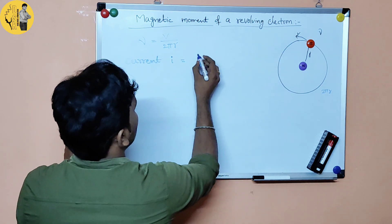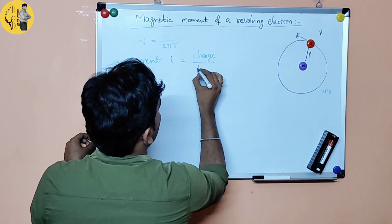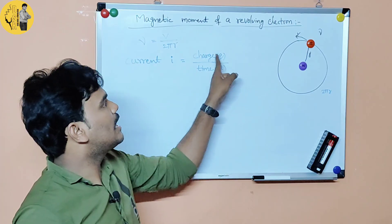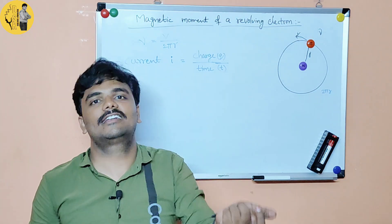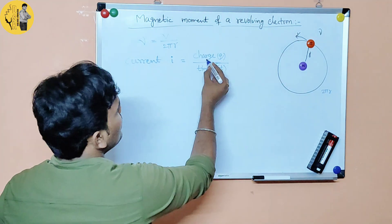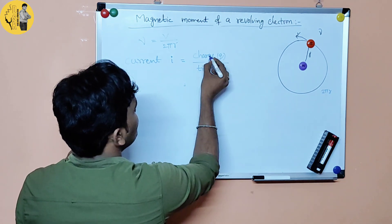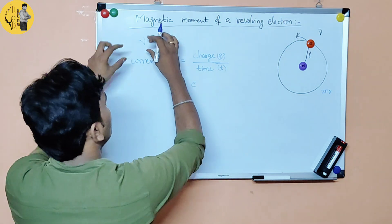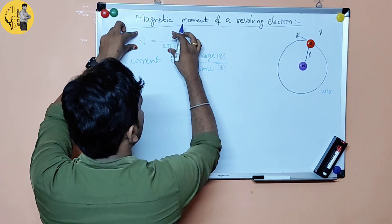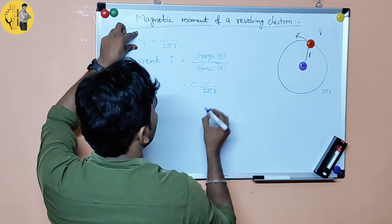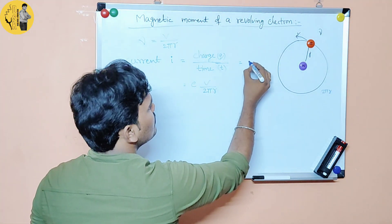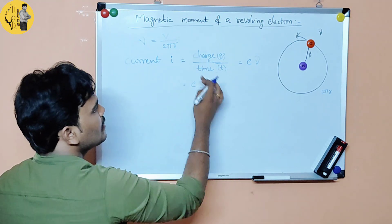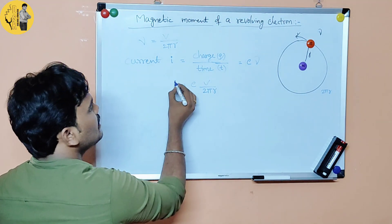Current i equals charge divided by time, that is i equals dQ by dT. The rate of change of charge is current. Here the charge of the electron is e. Since 1 over time period equals frequency, current i equals e times frequency. Substituting frequency as V by 2 pi r, the final current expression is i equals eV by 2 pi r.